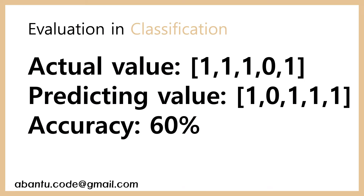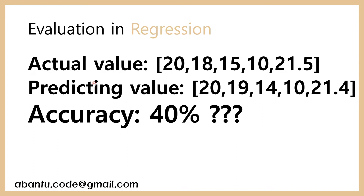When we deal with a classification problem, the evaluation is very easy. When you see this problem, we can easily know the accuracy is 60%. However, let's see this case. Using regression, I predict the value. When we compare actual value and predicted value, it is very similar. But when we get the accuracy score using a classification method, the accuracy is very low.